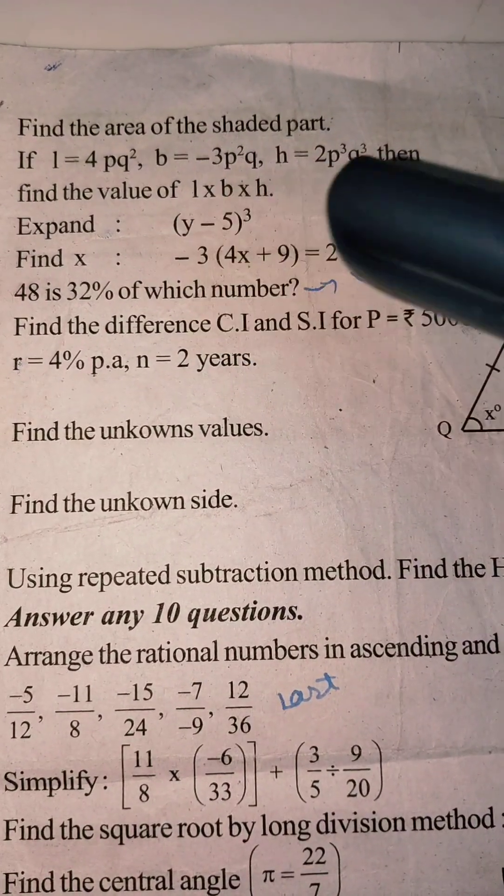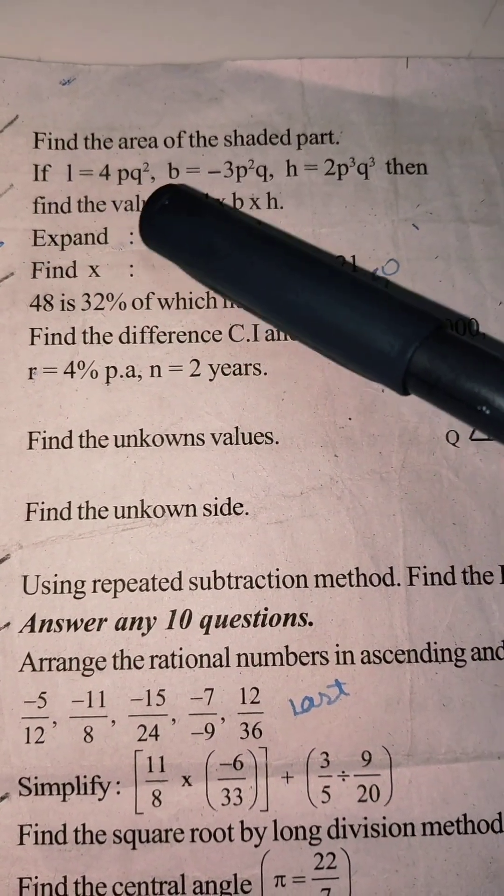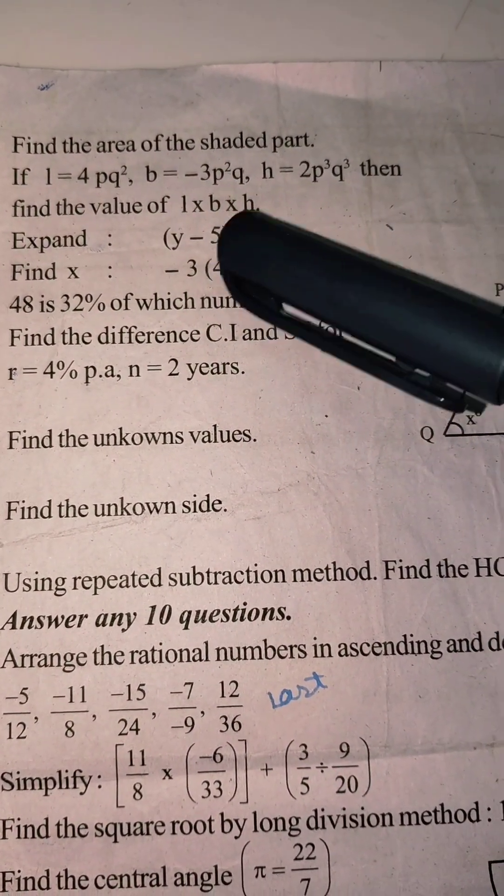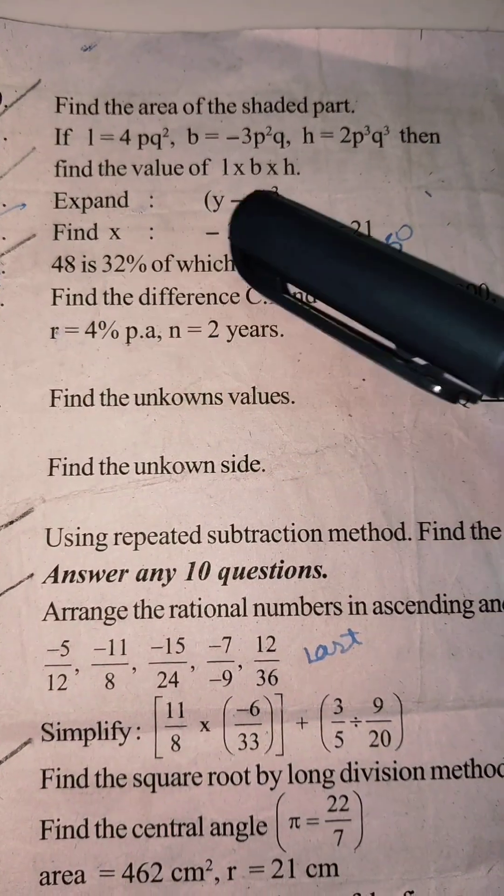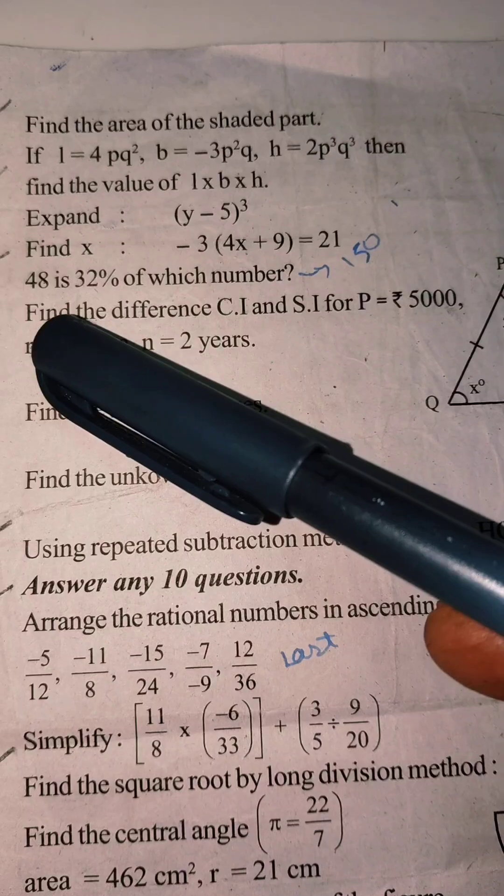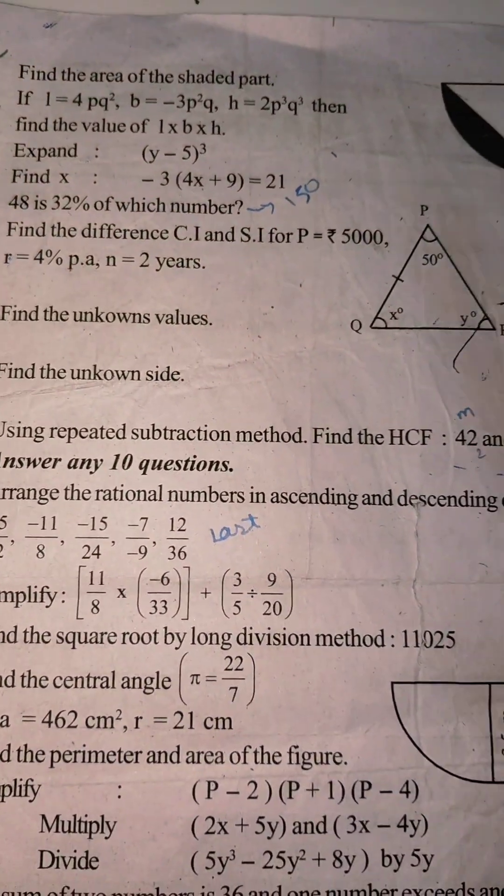Find the area of the shaded part. In the third chapter, this is an important question. If l is equal to 4pq squared, b is equal to minus 3pq squared q. Find the value l into b into h. If you expand the question, look at 48%. 48 is 32% of which number? Find the difference.